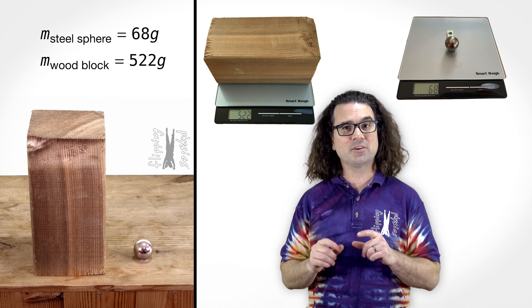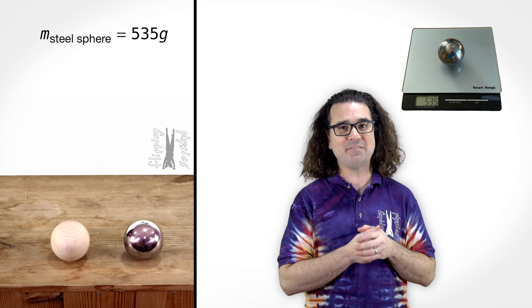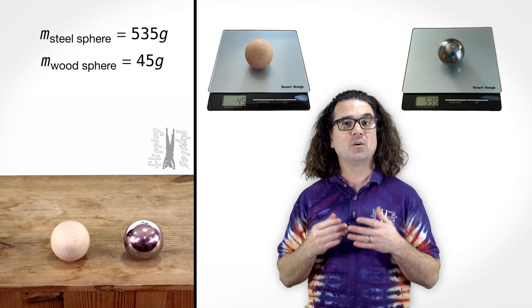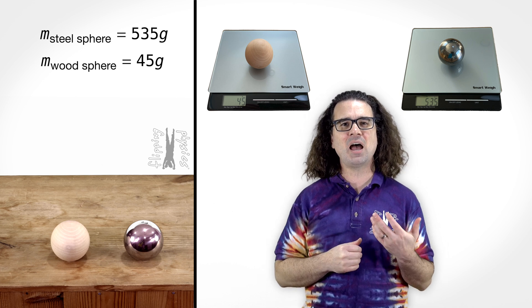When we look at two spheres of equal diameter, the steel sphere has a mass of 535 grams, and the wood sphere has a mass of 45 grams. So, clearly, when the two objects are the same size, the steel object is more massive than the wood object.